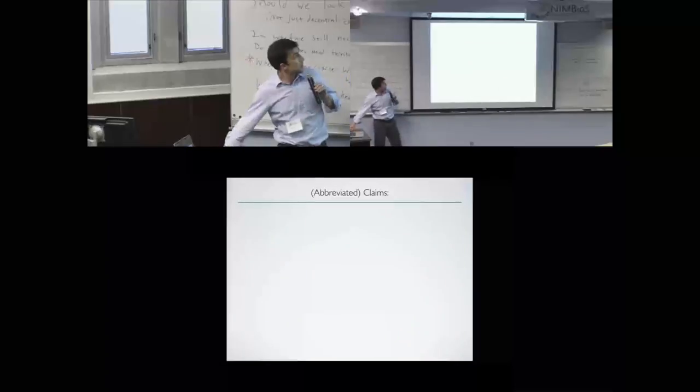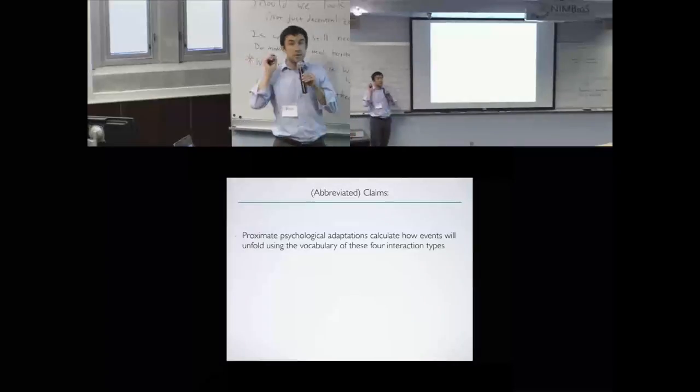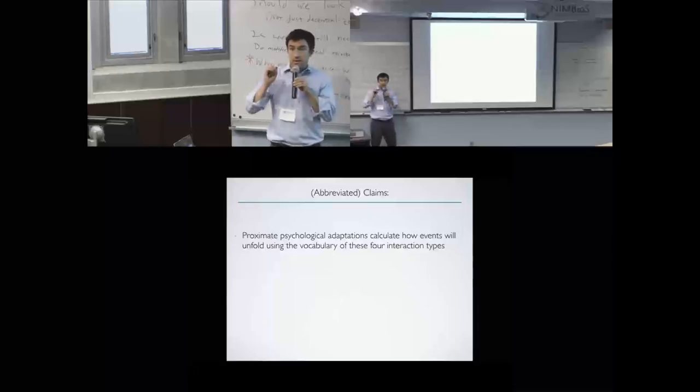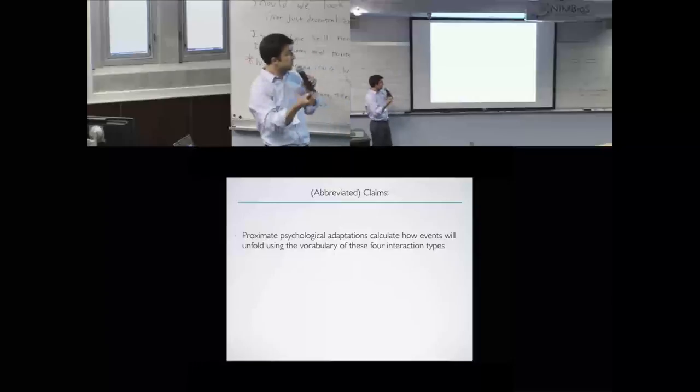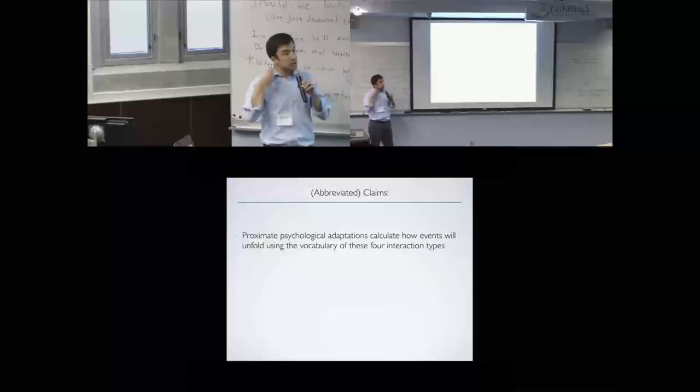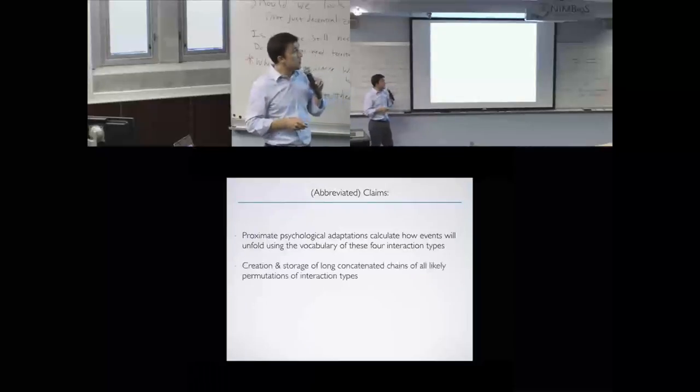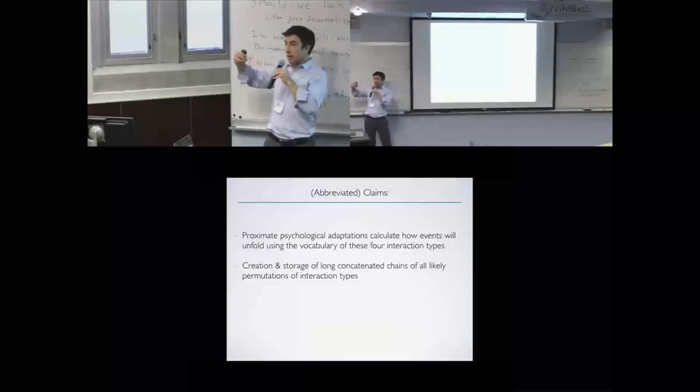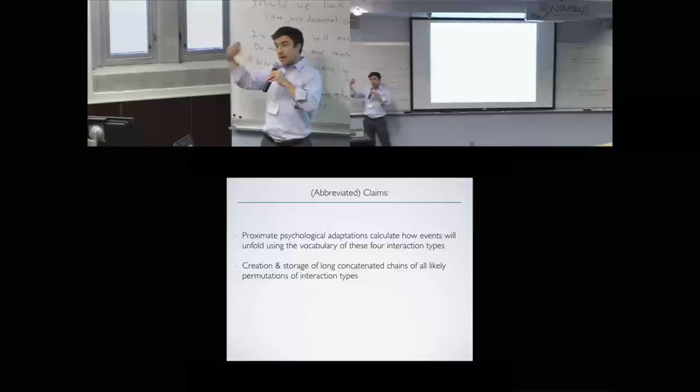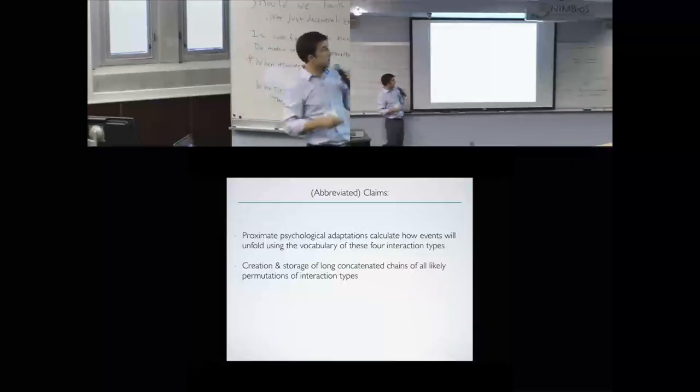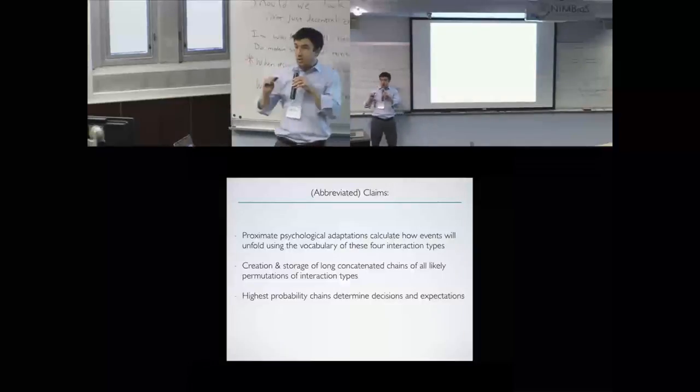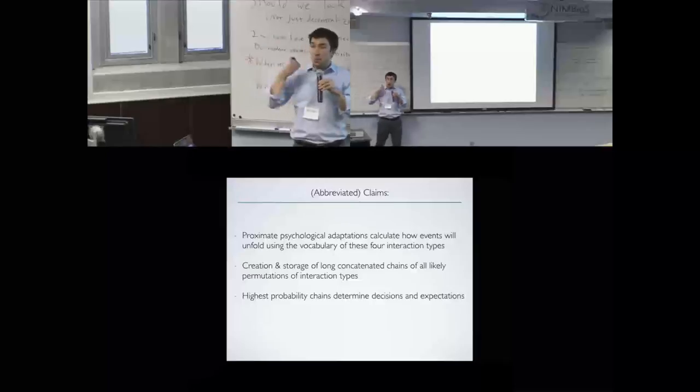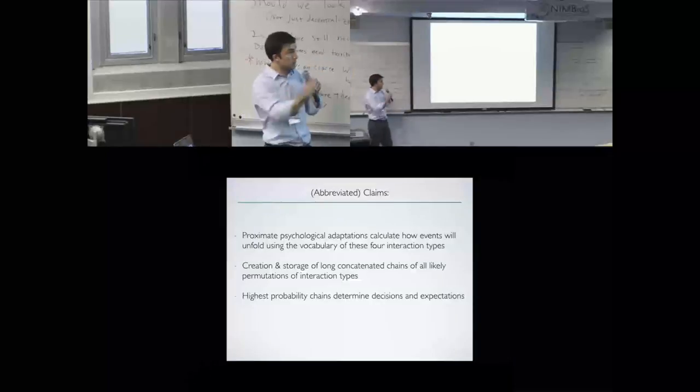Really quickly, the abbreviated claims are that this is the framework for how the proximate psychology actually represents coalitional conflicts or decisions about imposing costs. There are adaptations for calculating how events are going to unfold using the vocabulary of these interaction types. What basically happens is there's this long calculation and storage of these concatenated sequences of interaction types. The highest probability given on-the-ground cues of likely outcomes is what determines what becomes conscious and what actually gets decided—what people worry about, what they choose to do.